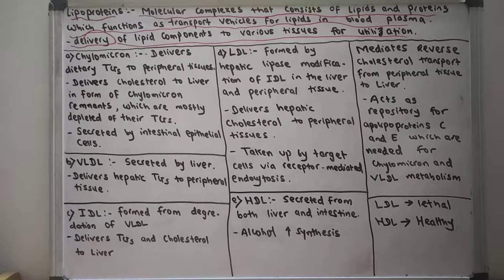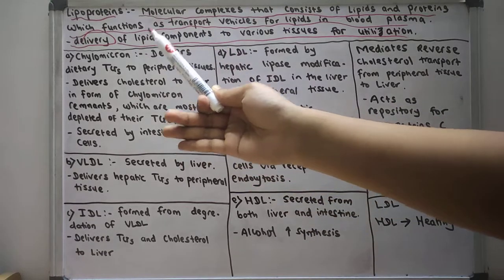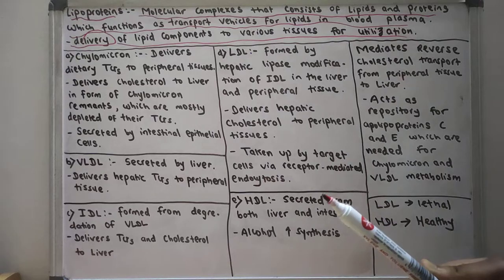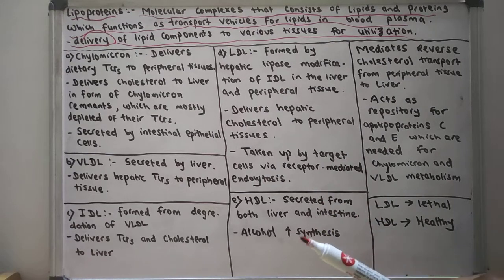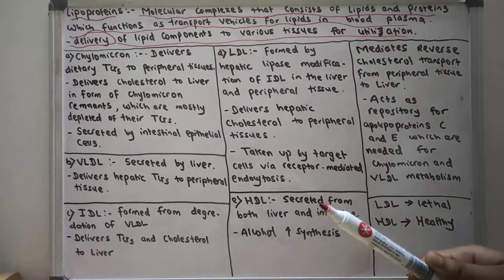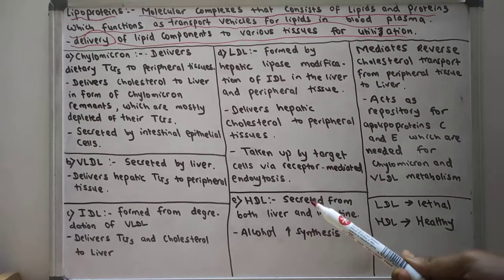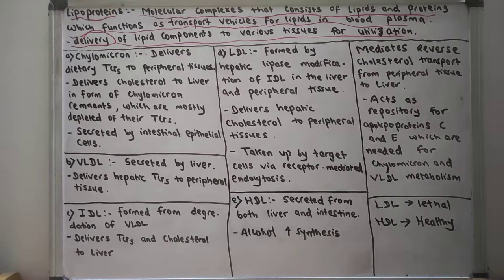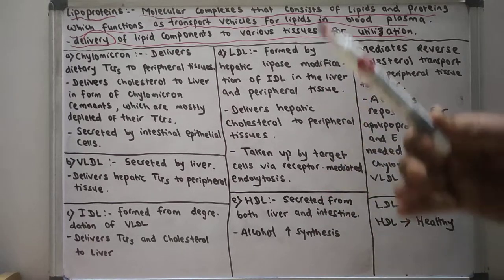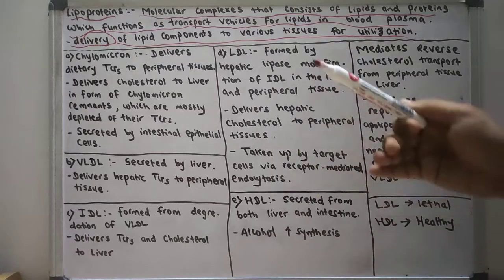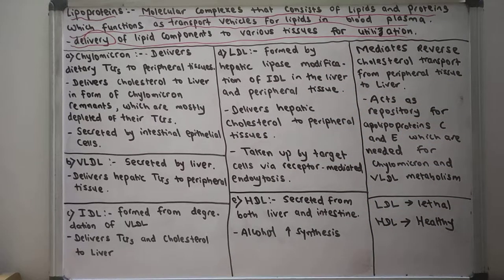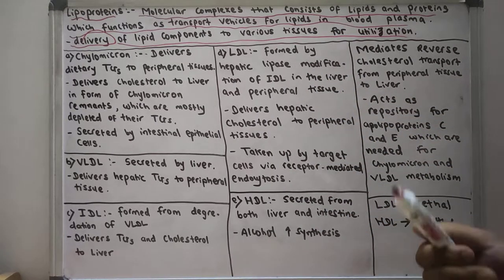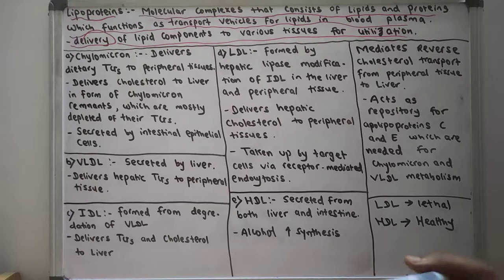The various lipoproteins are: chylomicrons, VLDL (very low density lipoprotein), IDL (intermediate density lipoprotein), LDL (low density lipoprotein), and HDL (high density lipoprotein). These are the five lipoproteins found in our body. Now let us discuss each lipoprotein in detail — where they are secreted and what their functions are.